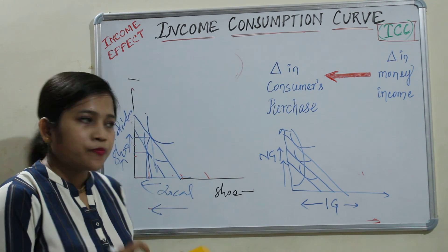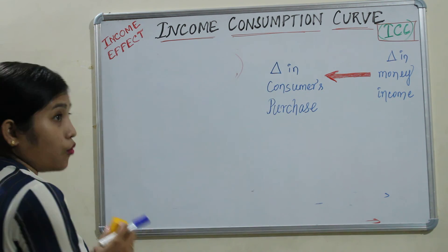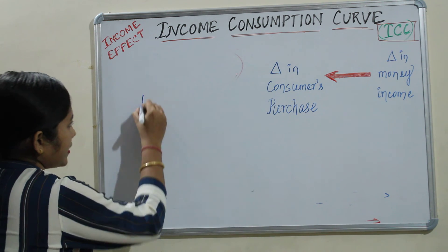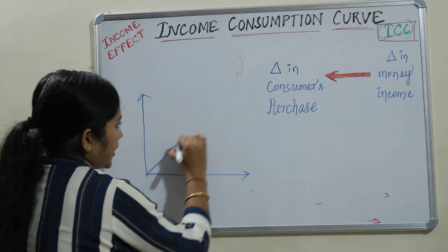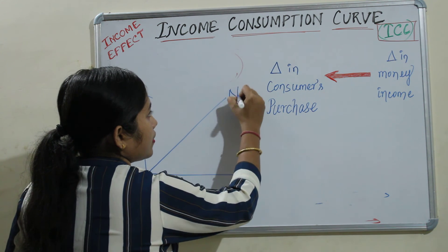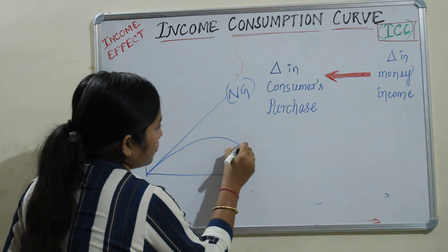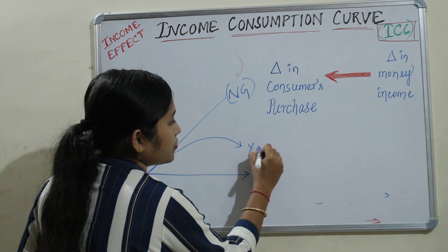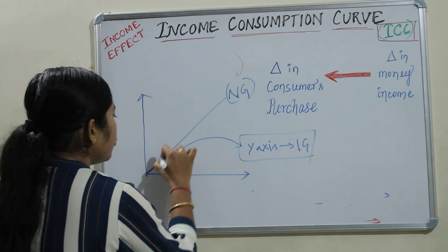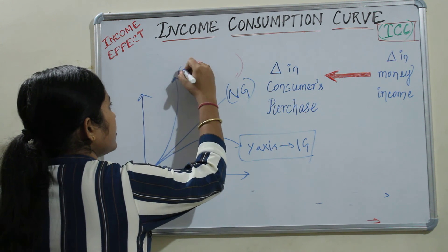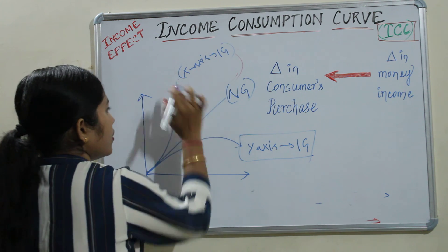Overall, showing all three cases in one graph: the income consumption curve will be a straight line in the case of normal goods; it will be a downward sloping curve when the inferior good is taken in the Y-axis; and it will be an upward sloping curve when the inferior good is taken in the X-axis.